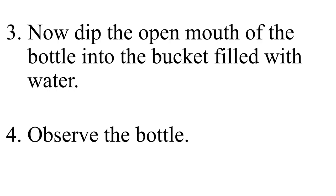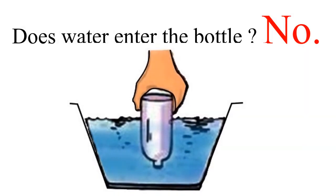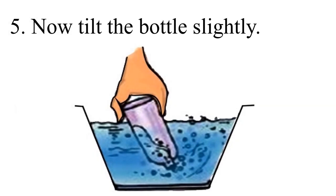Step 4: Observe the bottle. Does water enter the bottle? No. In this picture, we can see how the first step is to be carried out. We just have to invert the water bottle and then insert it into the bucket filled with water. Step 5: Now tilt the bottle slightly. You can check how the bottle is to be tilted.